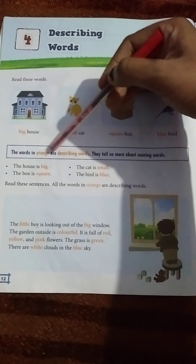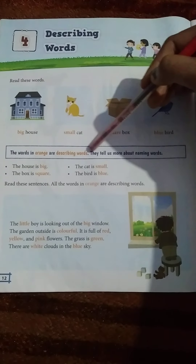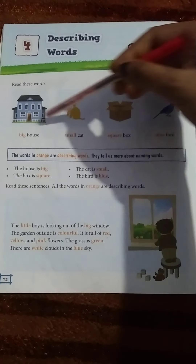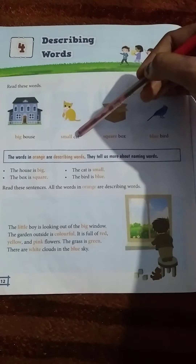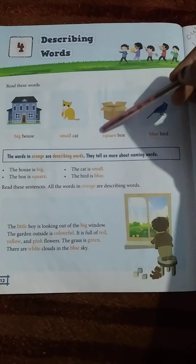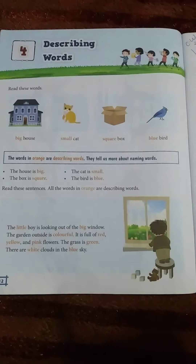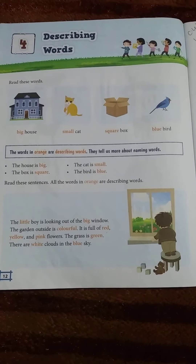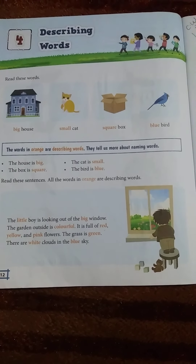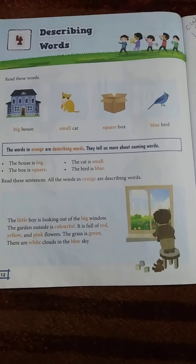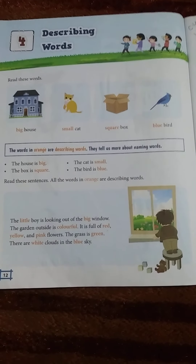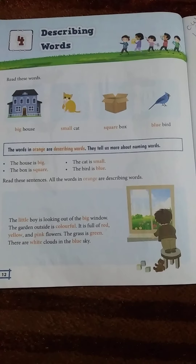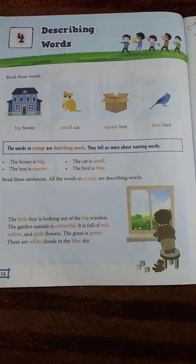The words in orange are describing words. They tell us more about naming words. So the words in orange are describing words. If there is a naming word — it is a house — we can say it is a beautiful house. So what is 'beautiful'? It is a describing word.